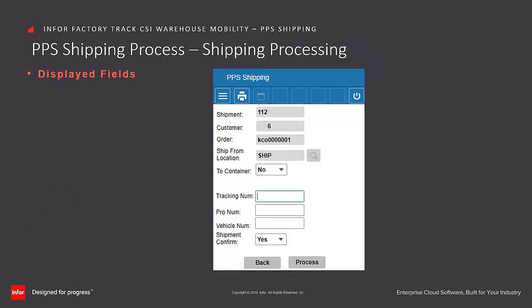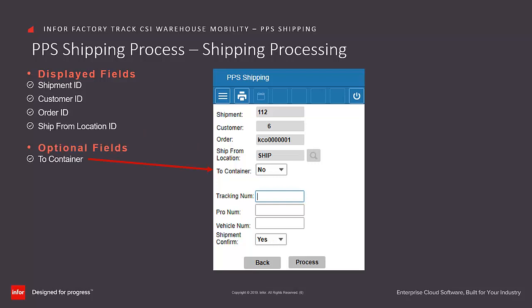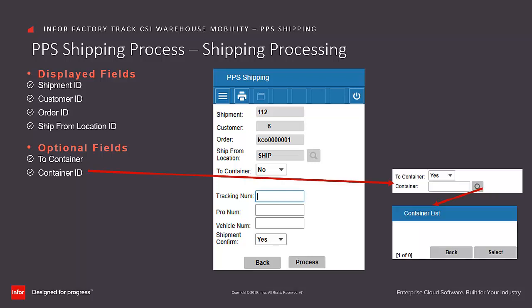The PPS shipping process screen displays fields associated with the previous selection screen. These fields are the shipment ID, customer, order number, and ship from location. We then indicate whether this will be shipped by container — this defaults to no. If yes is selected, we enter, scan, or search the container ID.